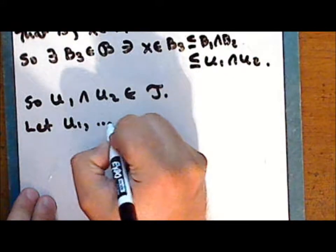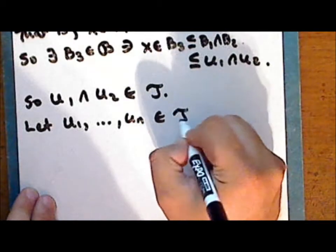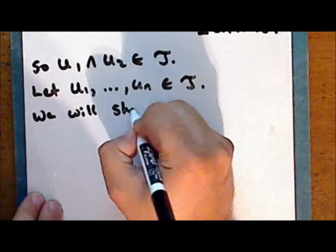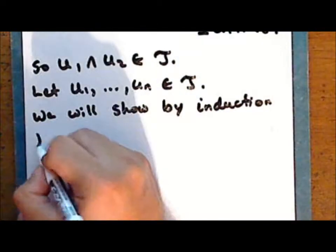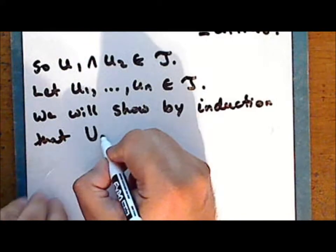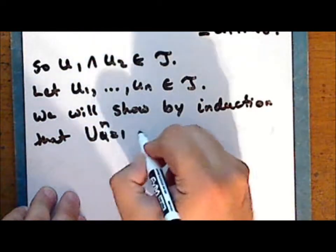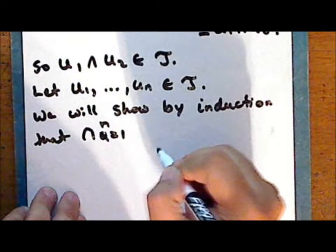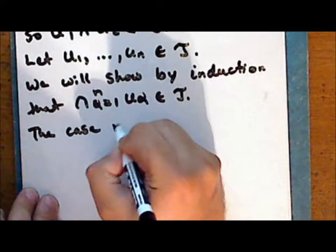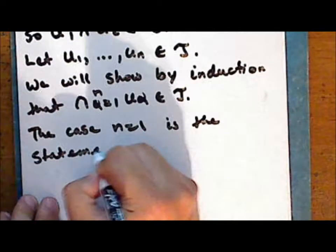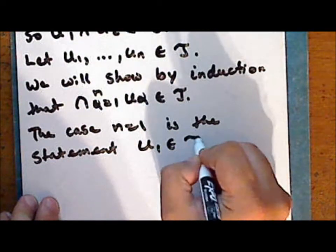Let U_1 through U_n be a finite collection of sets in τ. We will show by induction that the finite intersection of these sets is also in τ. The base case n = 1 is simply the statement that U_1 is in τ, which is true.